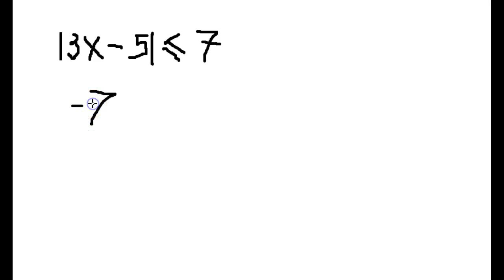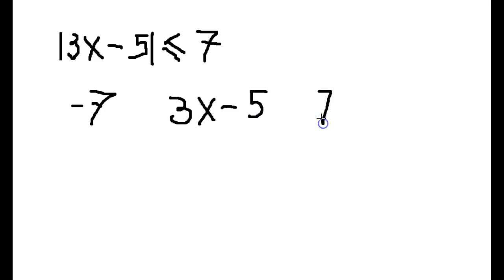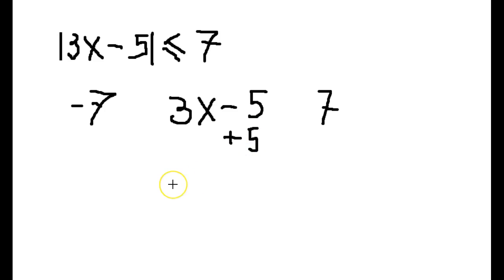We put negative 7 on the left, 3x minus 5 in the middle, and positive 7 on the right. Now we have to resolve the expression 3x minus 5 — in other words, simplify it until we get x by itself. We'll use the same tools as when we solve equations, starting by adding 5 to all three sides of the inequality.